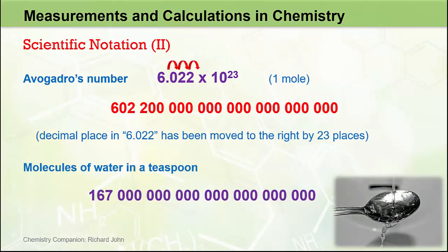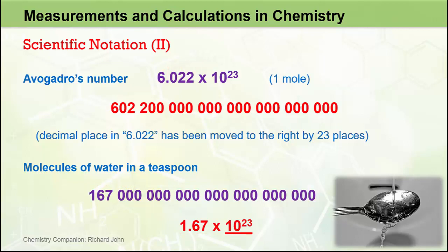We can do the reverse as well. We saw in the previous video that there are 167 billion trillion molecules of water in a teaspoon of water. To convert this huge number into scientific notation, we first identify 1.67 as being the coefficient. Remember, the coefficient only has one number to the left of the decimal point, and that number is never zero. We then count how many places we have to move the decimal place to get to the end of the number — in this case, 23 places. So this number is best expressed in scientific notation as 1.67 times 10 to the 23.